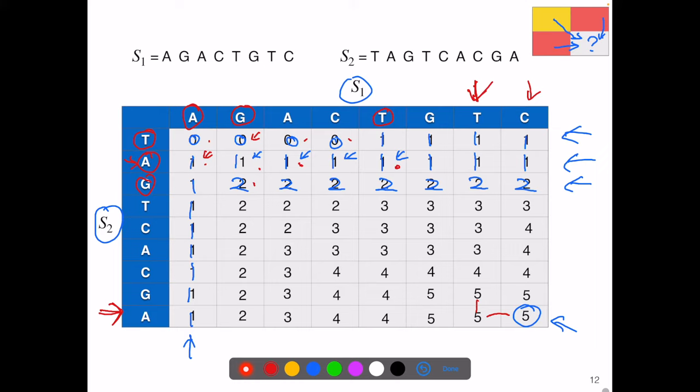Okay, so next we'll trace back. Now we're looking at the letter T and the letter G. They don't match. So we must have inherited this 5 from one of the three surrounding cells. So that's from this one. So we went this way. Next, we look at the letter G and the letter G. So there is a match. We must have gotten here from this cell. Whenever we see a match and a jump like this, we use a purple color.